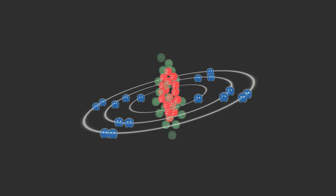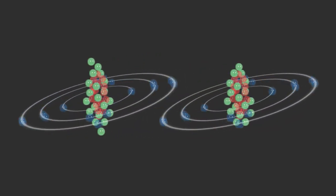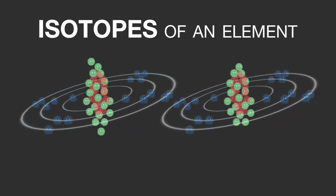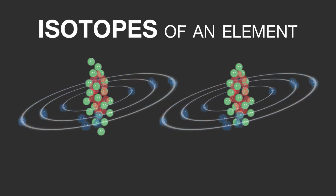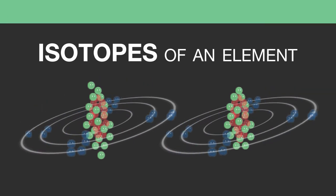Elements can exist with slightly different numbers of neutrons. We call these isotopes of an element. It is particularly common for heavier elements, but a familiar lighter example is chlorine.